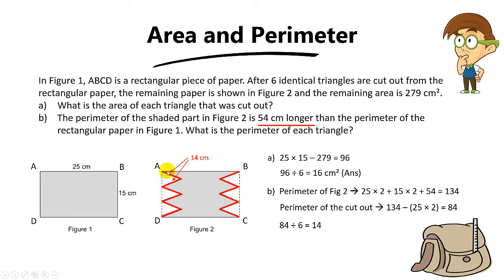But do take note, you can't take 14 divided by 2 to find one length. The reason is because they never said that the triangles are isosceles, so you can't assume that the two lengths are the same.